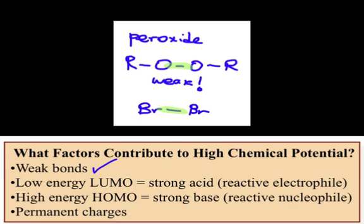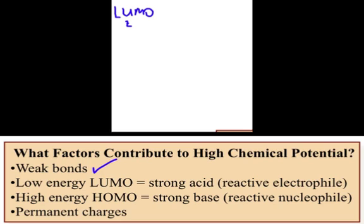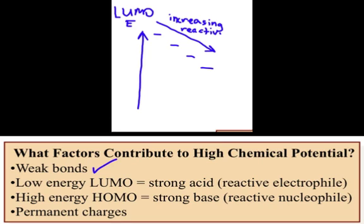And that transitions very nicely into the next point of the low-energy LUMO, or a strong acid or reactive electrophile. A low-energy LUMO for a certain compound is going to be more reactive than a higher-energy LUMO. So if a particular compound has a low-energy LUMO, it will indeed be a strong acid or a reactive electrophile.